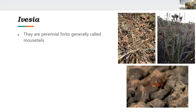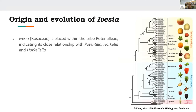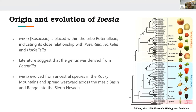Ivesia is a group of about 38 taxa, which are generally perennial forbs called mouse tails, spread across the entire western United States. Most are found in disjunct populations and are more or less relics of a previously widely distributed ancestral species. Ivesia is placed within the Rosaceae in the tribe Potentilleae, indicating a strong taxonomic relationship with Potentilla, Horkelia, and Horkeliella. Several studies show this genus is derived from Potentilla, and some recent studies argue Ivesia should be clustered within a much larger Potentilla genus.